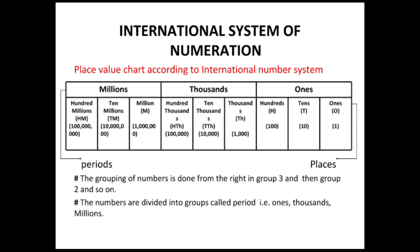In the thousands period, we have the places: thousands, ten thousands, and hundred thousands. In the millions period, we have the places: millions, ten millions, and hundred millions. Always start from the right when placing any digit in the place value chart — always start from the extreme right group, which is ones, and move left through tens, hundreds, then into the thousands period, and then millions.